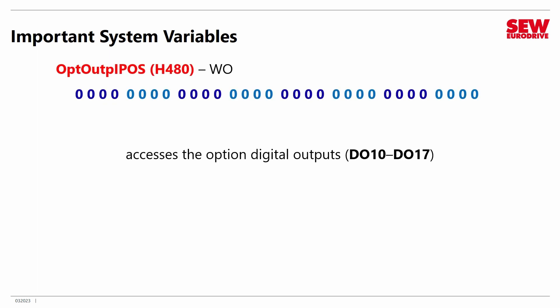This is a really good one: OPT OUTP IPOS, found in H480. This allows us to change the digital outputs on an option card — that's the expansion card that you can install in a MoviDrive B. So if you've got one installed, you can control the output bits DO10 through DO17 using this word. These are the bits that you flip in the word to control those I/O signals; most of the word doesn't do anything, it's just the bits down near the low end, the least significant end. Notice this is a write-only location — you can flip the bits by writing into it, but you can't read their current status.